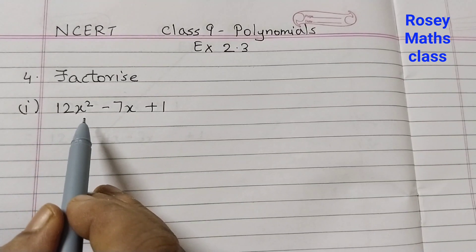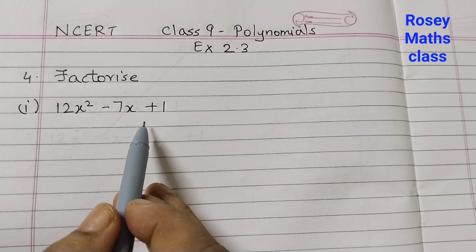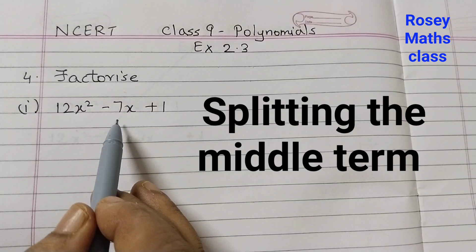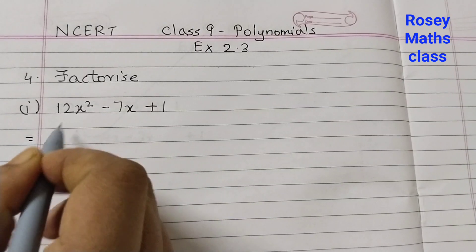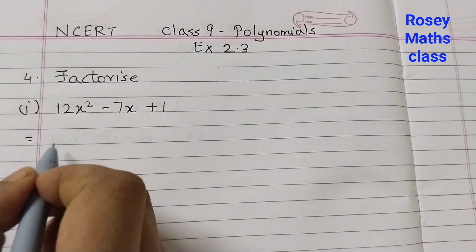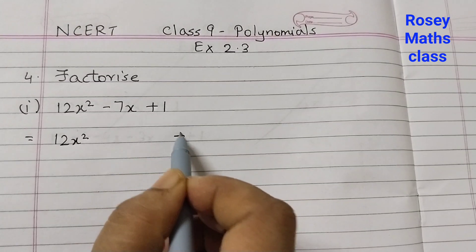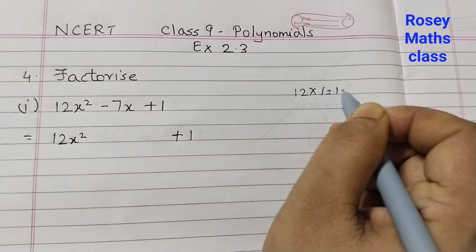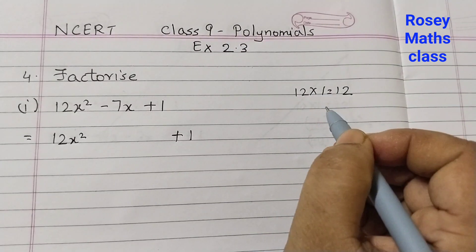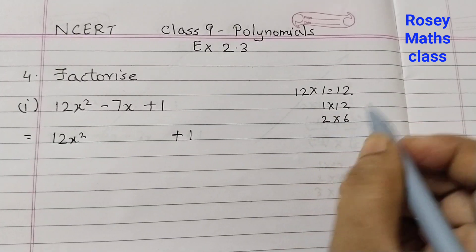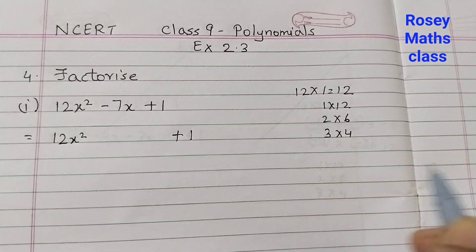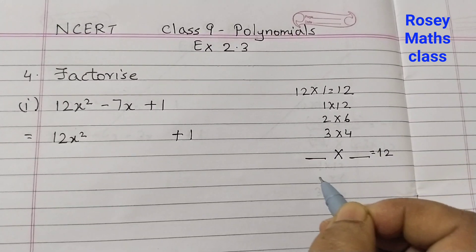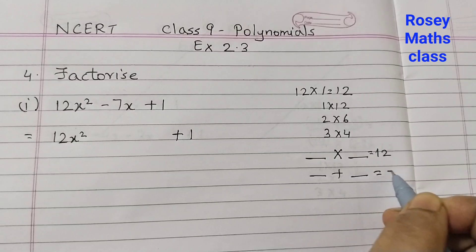First one: 12x squared minus 7x plus 1. We are going to use the method of splitting the middle term. We are going to split this middle term and find out the factors. First write 12x squared, and the last term also remains as it is. Multiply 12 and 1 — so 12 into 1 is equal to 12. Find out the factors of 12: 1 into 12, 2 into 6, 3 into 4. We need two numbers whose product is 12 and whose sum is minus 7.